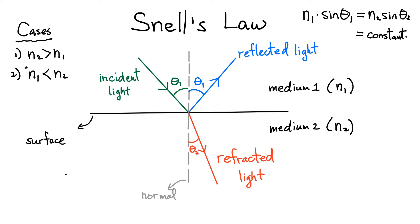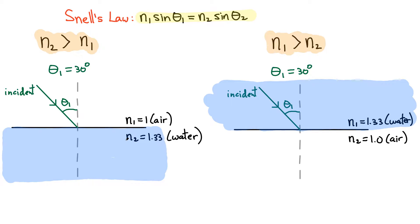Let's apply Snell's Law to our two specific cases. For case 1, I'm going to consider incident light in air going into water. So I have index N2, which is water, approximately 1.33, which is bigger than the index of air. With an incident angle of 30 degrees, applying Snell's Law is straightforward: 1 times sine of 30 degrees equals 1.33 multiplied by sine of theta 2.